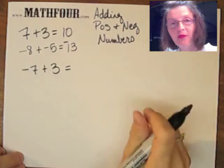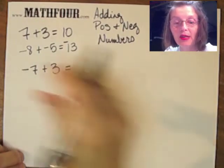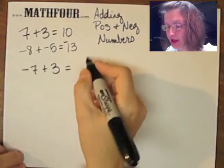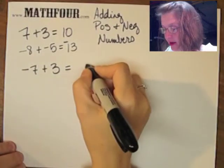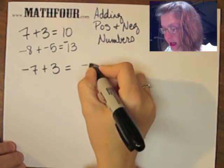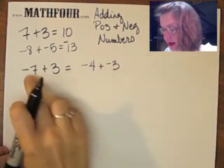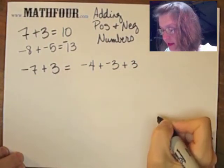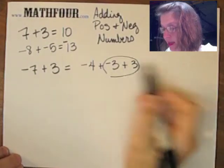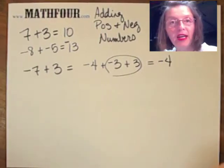A friend of mine said he could never remember that when he was a kid, so he would do this interesting trick. He would separate the 7 into two pieces: negative 4 and negative 3. That's negative 7, and then you still have the plus 3. Well, these two cancel each other and you have the result negative 4.